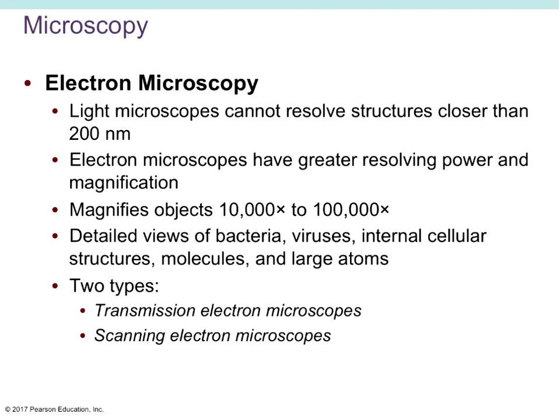Electron microscopes give you the greatest resolution. Why? Shorter wavelength equals greater resolution. Electron microscopes have a shorter wavelength, so they have greater resolving power. They can also magnify objects between 10,000 and 100,000 times their actual size, giving a very detailed view of bacteria, viruses, intracellular structures, molecules, and even some large atoms.